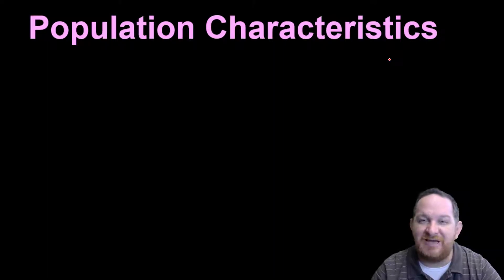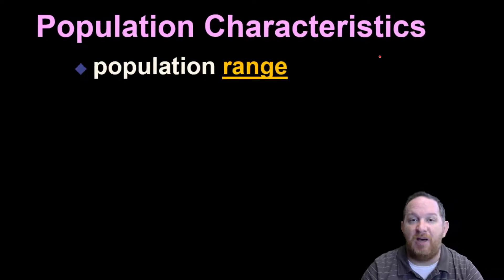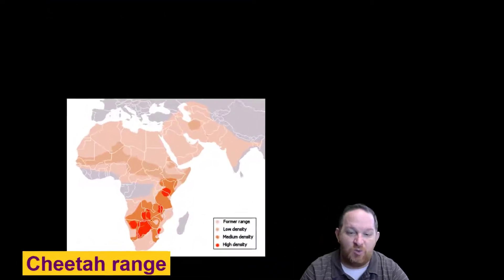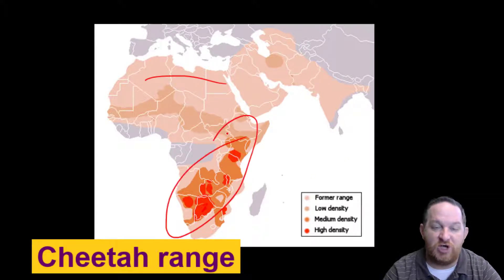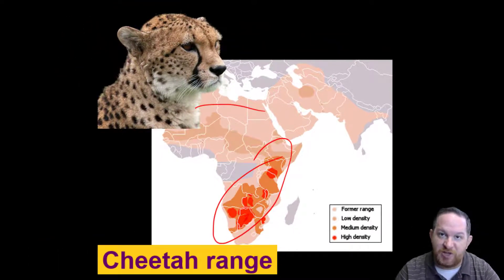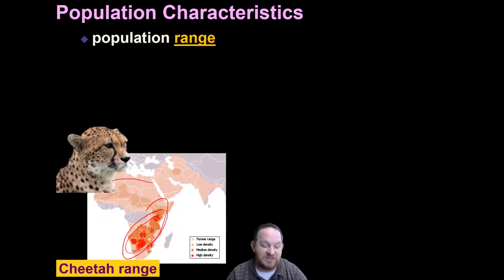So how do we assign some characteristics to a population? When we talk about populations, we often talk about the range of the population. I've got a prime example of a range for cheetahs. If you look down in Africa, you can see in the southern part where there's a high density range in red, a low range, and then where cheetahs used to roam. This is the range of a population — that's helpful to describe a certain population. Cheetahs have very little diversity and have pretty much been confined to these areas now.